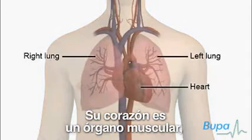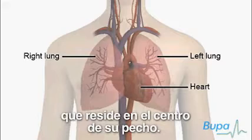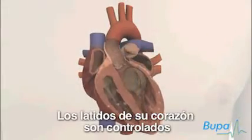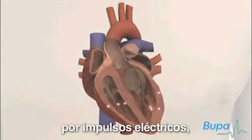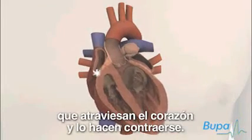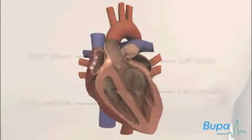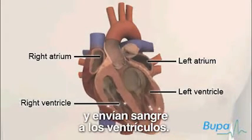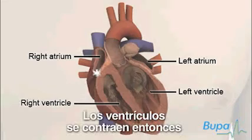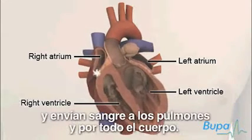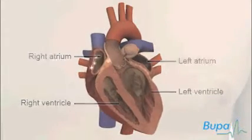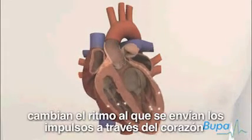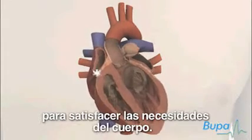Your heart is a muscular organ which lies in the centre of your chest. Your heartbeat is controlled by electrical impulses which travel across the heart making it contract. The atria contract first, sending blood into the ventricles. The ventricles then contract, sending blood to the lungs and around the body. Nerves supplying the heart change the rate at which impulses are sent across the heart muscle to meet the needs of the body.